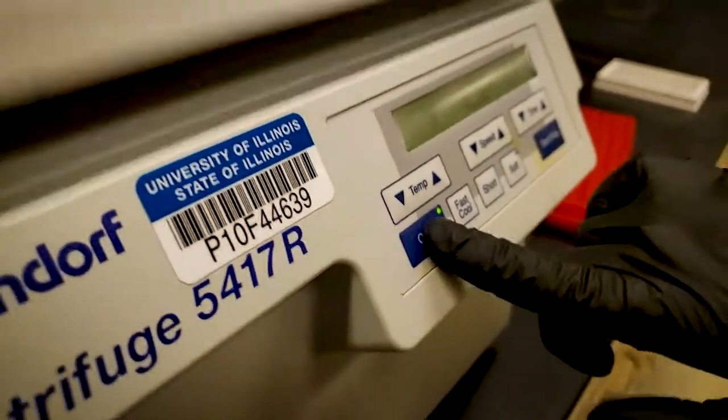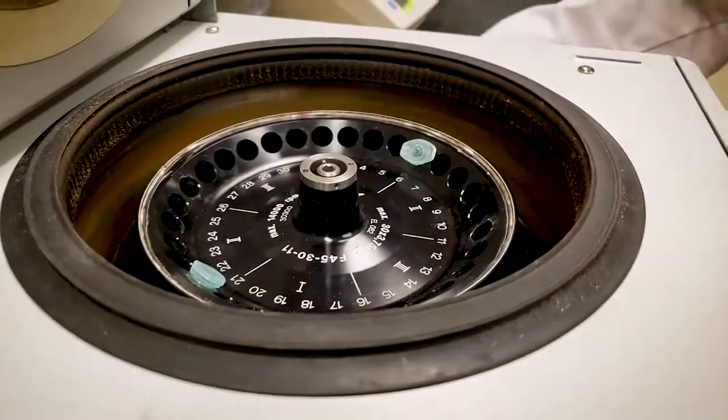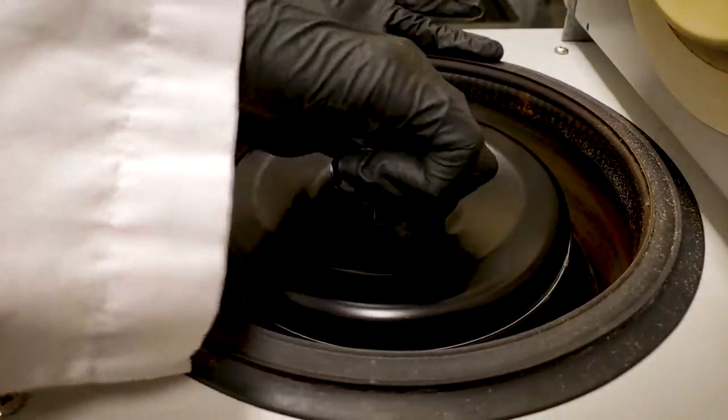Centrifuges are used to separate liquids based on density. So when you spin a liquid down in a centrifuge, the particles with the highest density will fall to the bottom of the tube, while the particles with the lowest density will remain at the top.